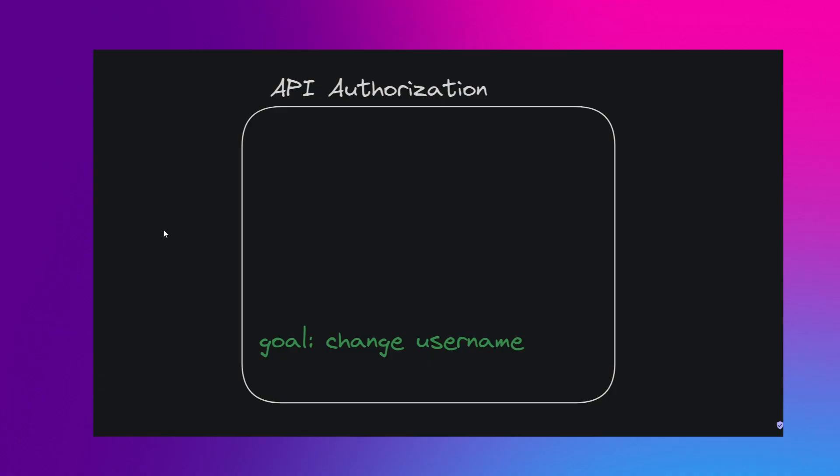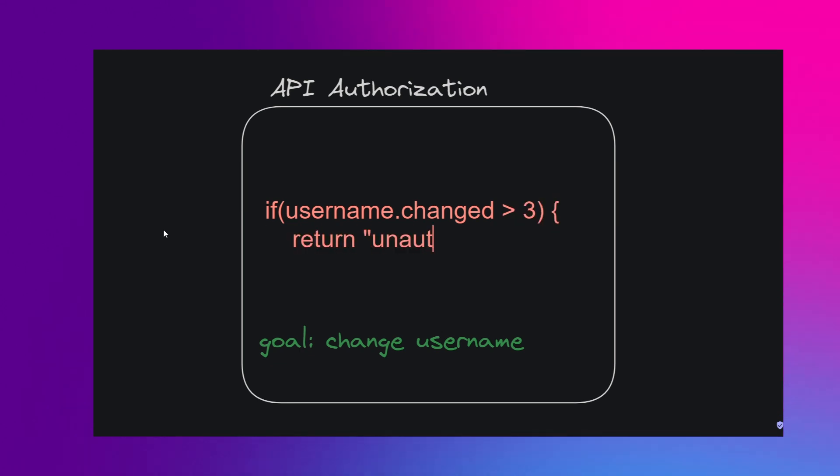Usually what you do is logical checks before you perform a certain action linked to an API endpoint. For example, the goal of one API endpoint is to change a username in a database. Before doing that, in regards to authorization, an example would be: has the user changed their username more than three times in the past hour? And if they did, then they are not authorized to do that same action in the same hour again.